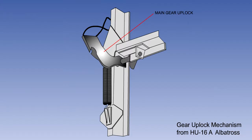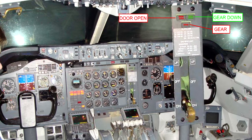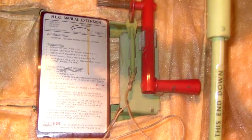A retractable landing gear is provided with mechanical locks to ensure that each leg is locked securely in the up or down position. It will have a means to indicate to the crew the position of each leg, and a means by which the landing gear can be lowered in the event of the failure of the normal power system.